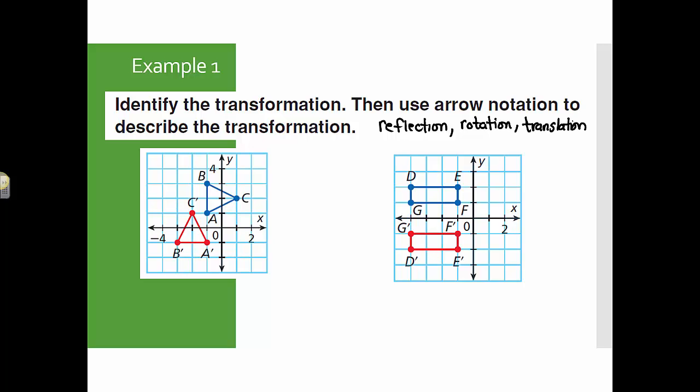For this first one, it looks like we have A, B, C here, and then A prime, B prime, C prime here. And this looks like it has been rotated. So I will say this first one is a rotation. And if we were to write it using arrow notation, I would say triangle ABC goes to triangle A prime, B prime, C prime. It looks like it's been turned a bit.